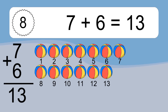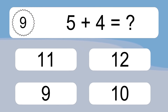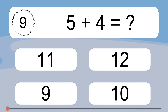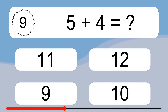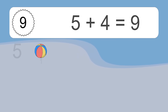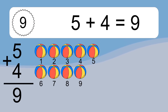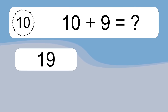5 plus 4 equals what? 5 plus 4 equals 9. Let's count it: 1, 2, 3, 4, 5, 6, 7, 8, 9.